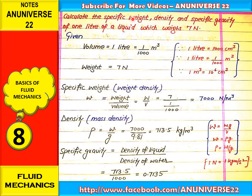Firstly, we need to find out the specific weight, also called weight density. It is denoted by small w and is equal to the ratio of weight upon volume. Weight W is given as 7 N, and volume V is given as 1 upon 1000 meter cube. So the final result is 7000 N per meter cube, which is the unit of specific weight.